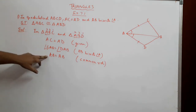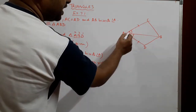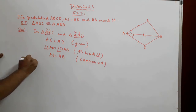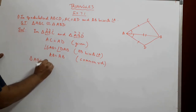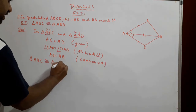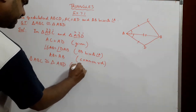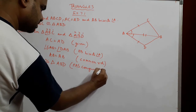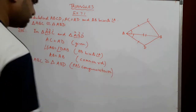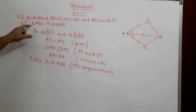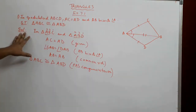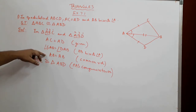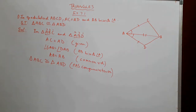We now have side, angle, and side — corresponding side, angle, and side. As a result, triangle ABC is congruent to triangle ABD by the SAS (side-angle-side) congruence criterion. That is what we were asked to show — two corresponding sides and the angle between them are equal.